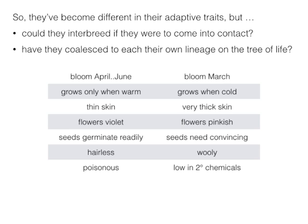These two populations have become different in their adaptive traits, something a taxonomist or biologist might recognize and use to call them different species. But we would then wonder: are these species that we name as different also different in other ways? For instance, are the plants on the coastal side able to interbreed with the plants on the desert side if another rare dispersal event brings them back together? Would there be so much interbreeding that it would homogenize the difference? And have they coalesced so that each is their own lineage on the tree of life?